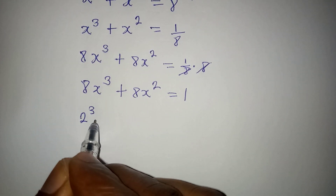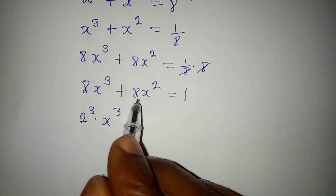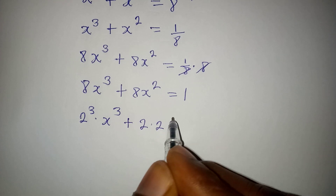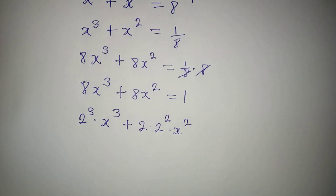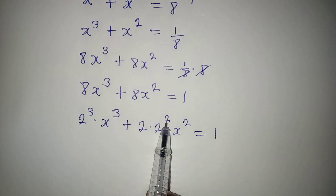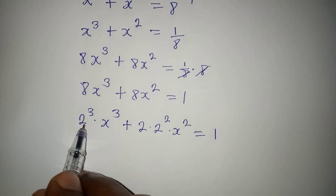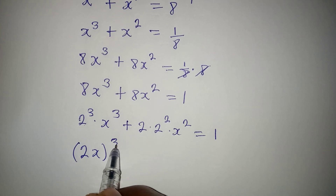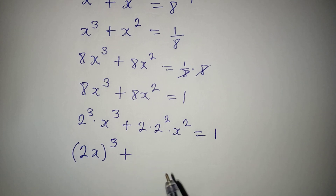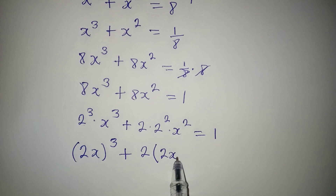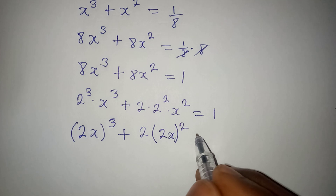Now, 8 is 2 to the power of 3, multiplied by x to the power of 3. And the 8 in the second term can be broken into 2 times 2 squared, times x squared. So we get (2x)³ plus 2(2x)² equals 1, making sure both terms have the same base, according to the laws of indices.